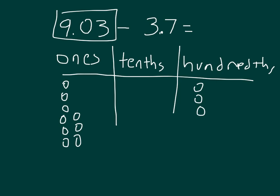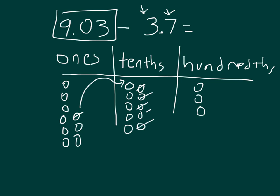We're taking away 3 and 7 tenths. To take away the 7 tenths, I take one of the ones and regroup it to the tenths — 1 one equals 10 tenths, counting 1, 2, 3, 4, 5, 6, 7, 8, 9, and 10. Then I take away those 7 tenths — 1, 2, 3, 4, 5, 6, and 7. And then 3 ones — 1, 2, and 3. I did regroup the 1 with them there, which is why I can still cross out 3 of them.